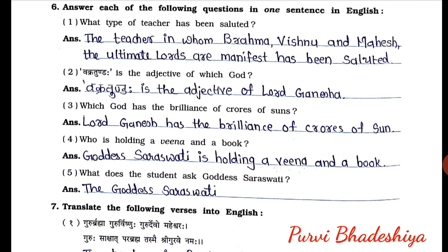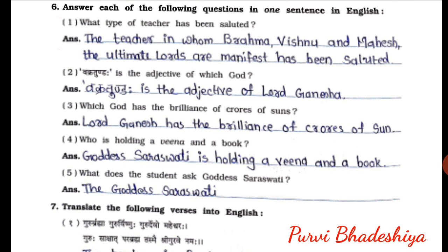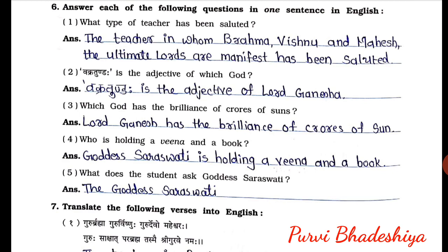Third one: which god has the brilliance of crores of sons? Lord Ganesha has the brilliance of crores of sons. Fourth one: who is holding a veena and a book? Goddess Saraswati is holding a veena and a book. Fifth one: what does the student ask Goddess Saraswati? The student asks Goddess Saraswati to be pleased with them forever.